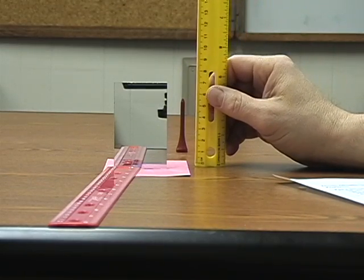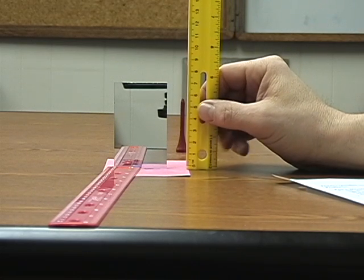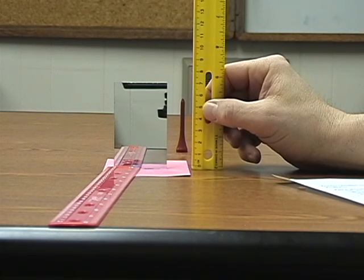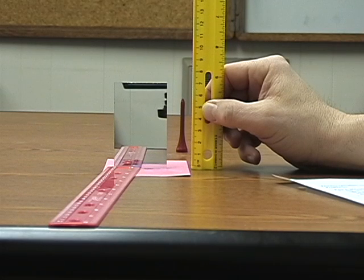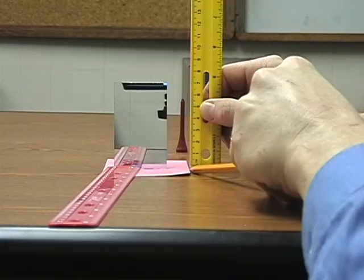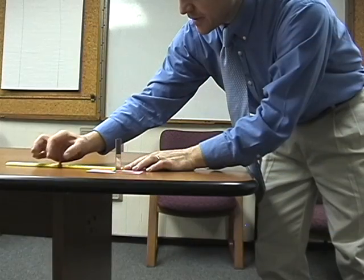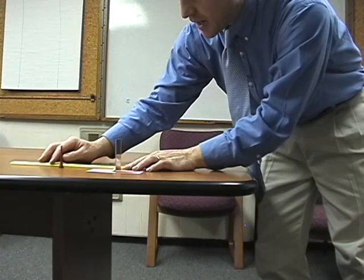We are now going to be measuring the size of the actual object from the perspective of the mirror. Again, you may need to get higher or lower on the table until you align the bottom of the golf tee to the bottom of your ruler. So it is 15 centimeters actually behind the mirror.